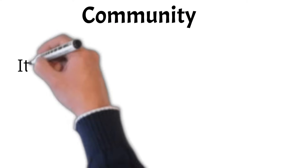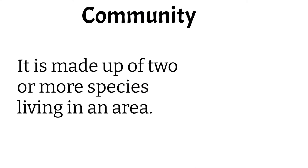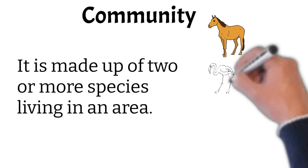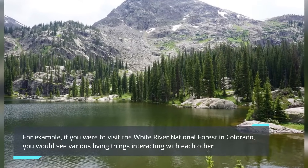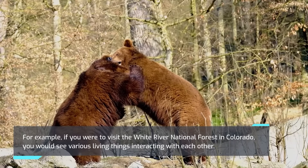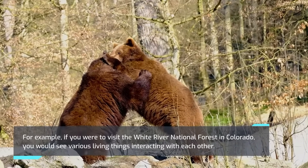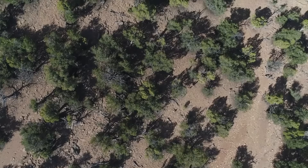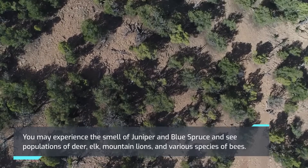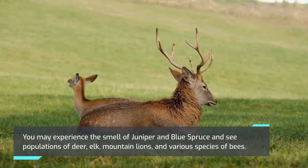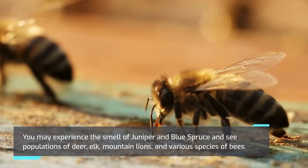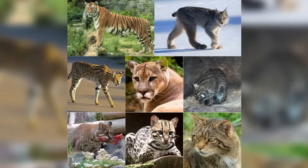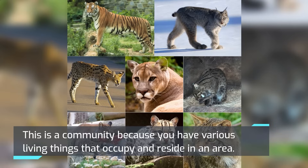A community is different from a population because it is made up of two or more species living in an area. For example, if you were to visit the White River National Forest in Colorado, you would see various living things interacting with each other. You may experience the smell of juniper and blue spruce, and see populations of deer, elk, mountain lions, and various species of bees. This is a community because you have various living things that occupy and reside in an area.